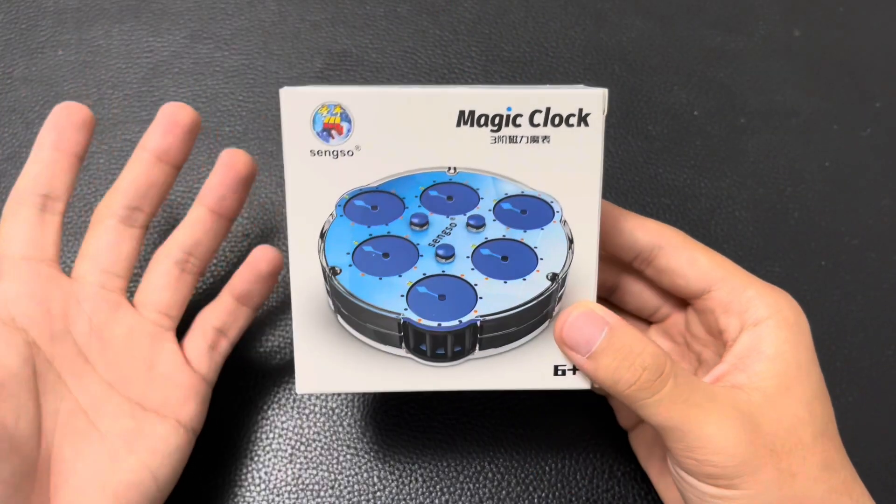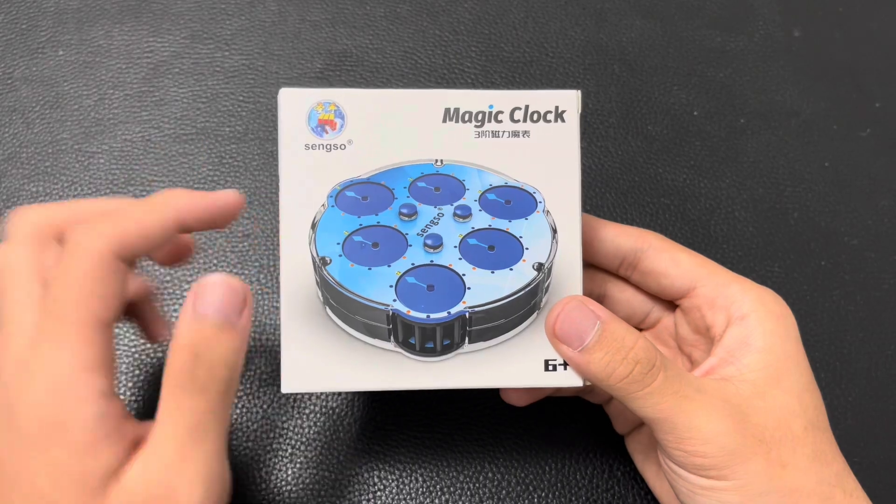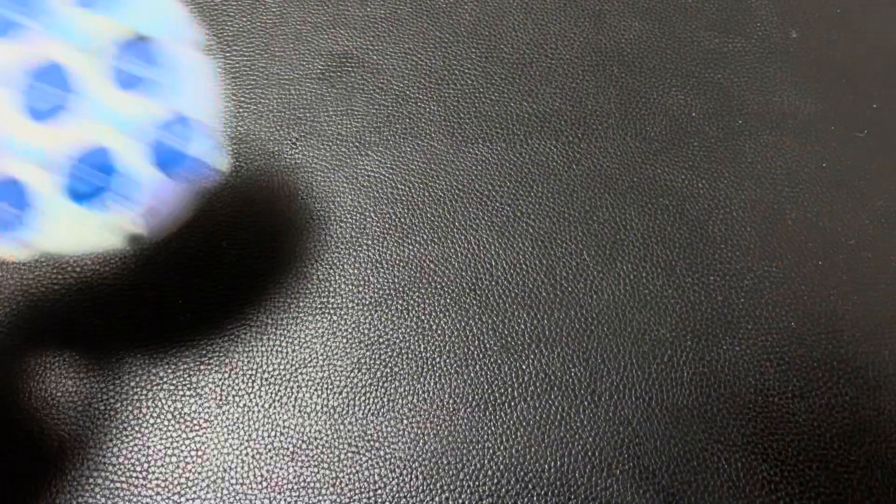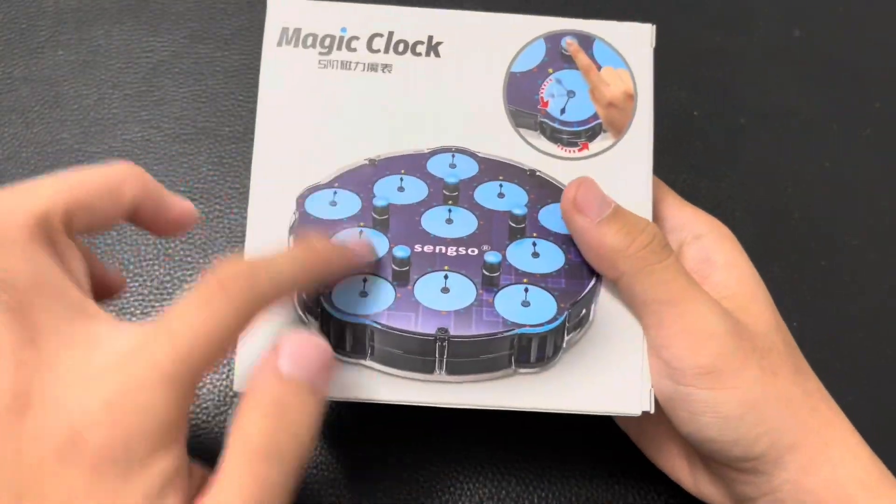So it looks to me that Shenshao names their clocks by the pins. So this is a 3x3, I guess this would be considered a 4x4, and this would be a 5x5.